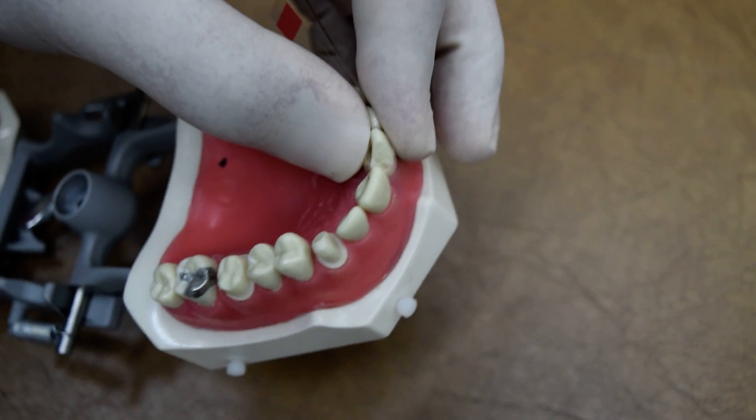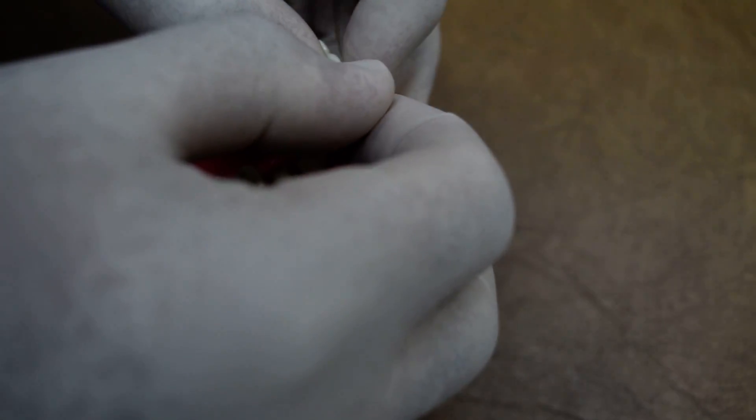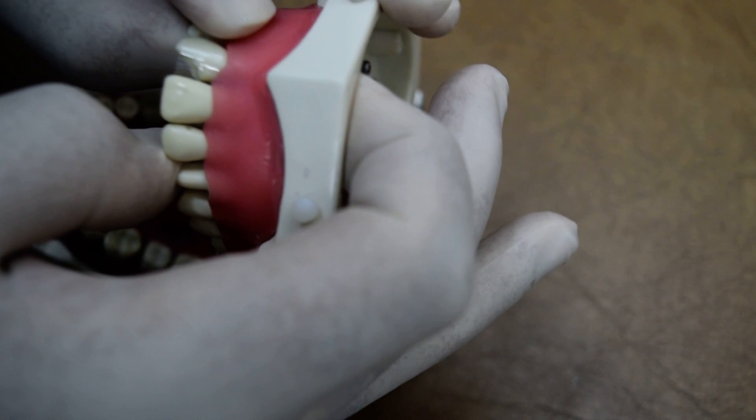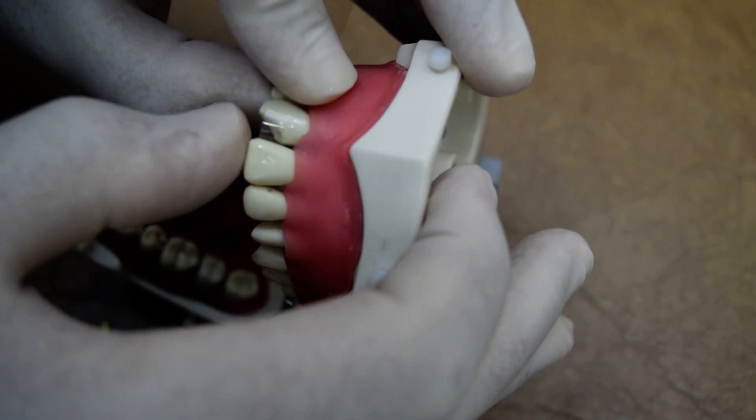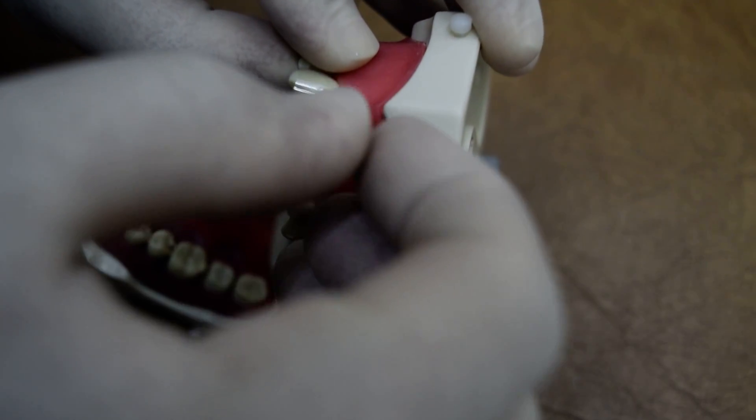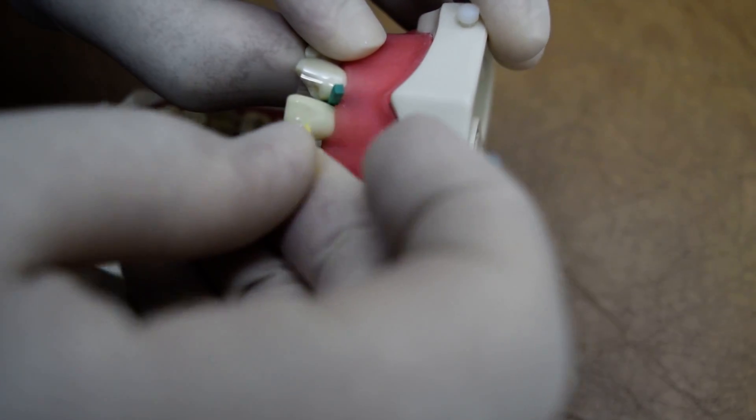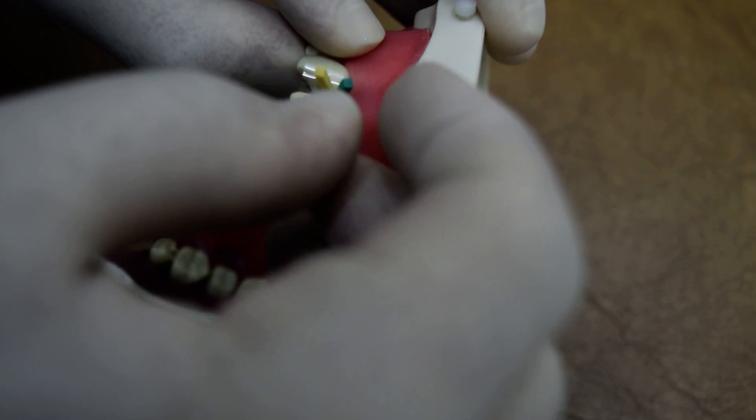So we are going to put the strip as deep as we can to follow the contour of the tooth. Make sure that it's following the contour before you apply the wedges, and I prefer putting here two wedges, one is big and another one a bit smaller, to make sure that there will not be leakage proximally.